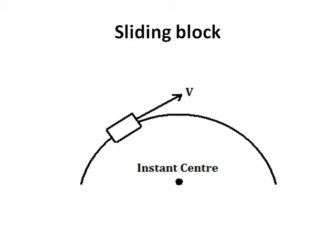For a sliding block on a curved surface, we know that the instant center is at the center of curvature, as this is the point that the sliding block rotates around. As the curved surface flattens, the location of the instant center moves towards infinity.